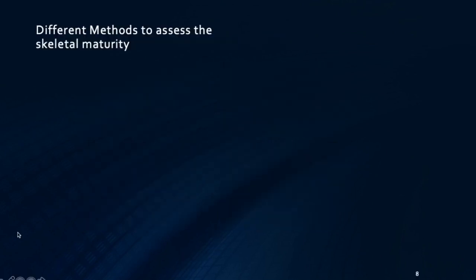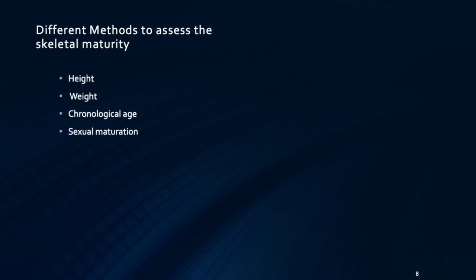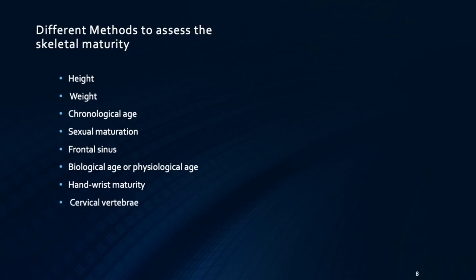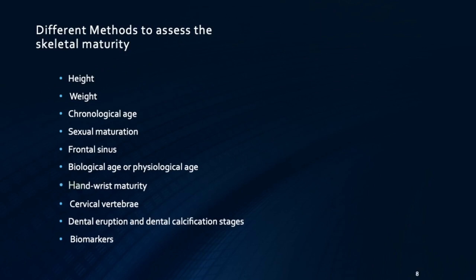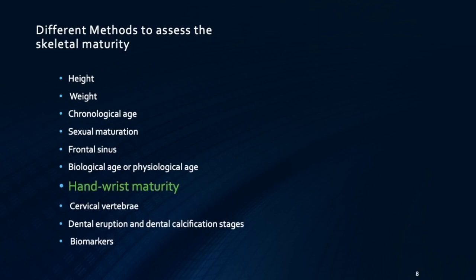When considering the different methods to assess skeletal maturity, these include height, weight, chronological age, sexual maturation, frontal sinus, physiological age, hand wrist maturity, cervical vertebrae, dental eruption and dental calcification stages, and biomarkers. Today we are going to deal with hand wrist maturity.